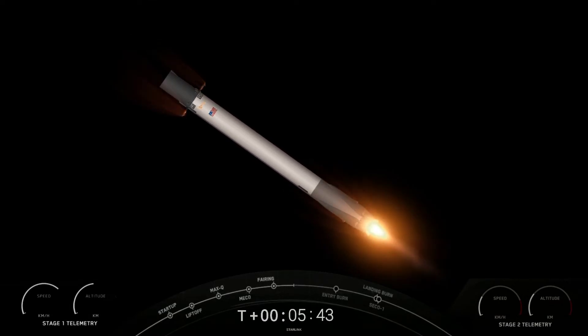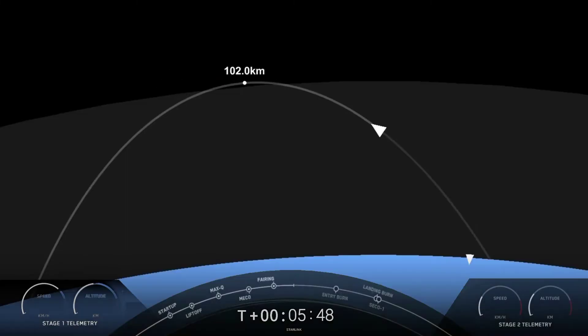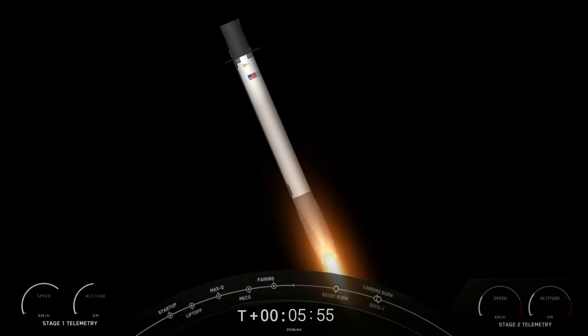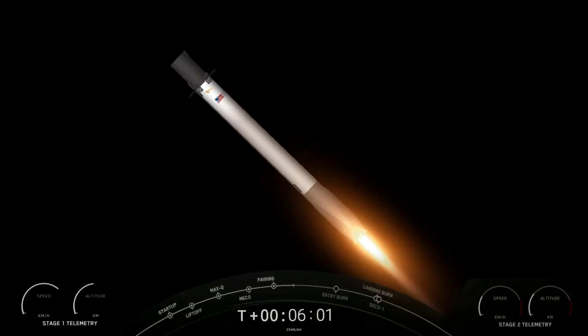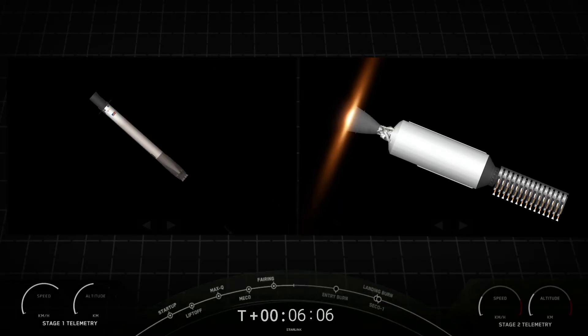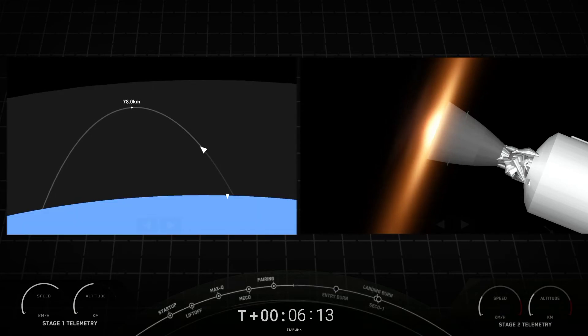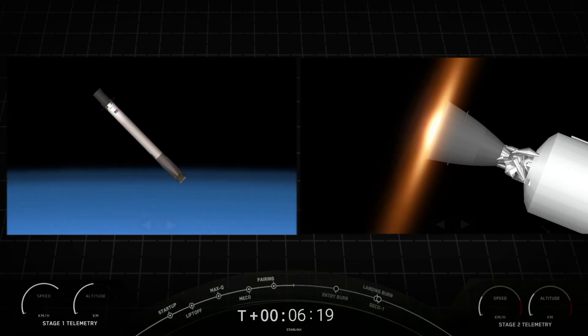Stage 1 entry burn startup. Stage 1 FTS is safed. And on your left-hand screen, you can see those engines reigniting. This burn will last about 20 seconds long. This is the entry burn for the first stage. Stage 1 entry burn shutdown. And as you saw, those engines shut down. That concludes the entry burn. Both vehicles continue to follow nominal trajectories. And just the call-outs that we want to hear, everything is still looking nominal for both vehicles.